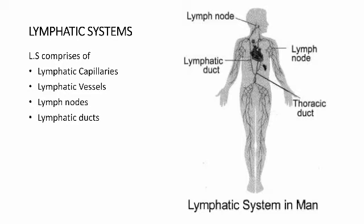Lymph is a fluid that flows through the lymphatic system. The lymphatic capillaries are minute structures that unite to form large lymphatic vessels. Lymph nodes are small, oval or pear-shaped structures located along the length of the lymphatic vessels.